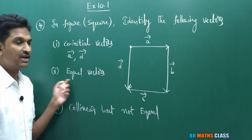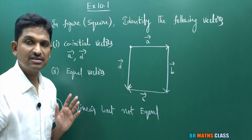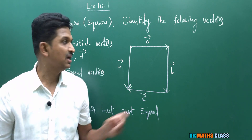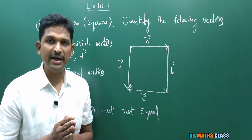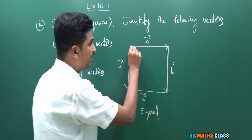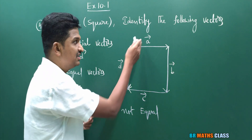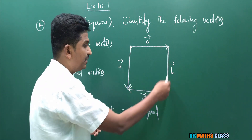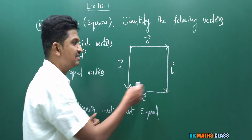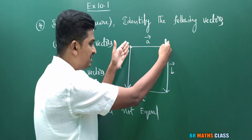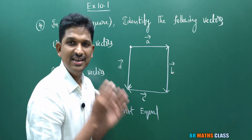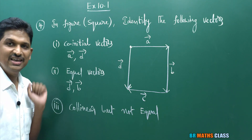Second: equal vectors — vectors having the same magnitude and the same direction. As this is a square, all four vectors have equal magnitude. Now we need the same direction. a̅ and c̅ are in opposite directions, so they are not equal. Observe d̅ and b̅ — both have the same magnitude and the same direction. Therefore, d̅ and b̅ are equal vectors.